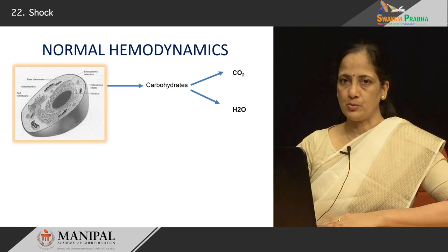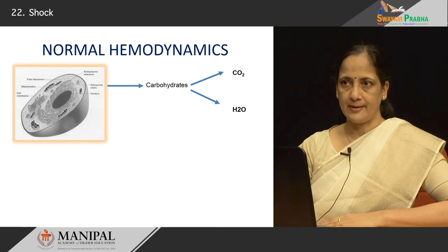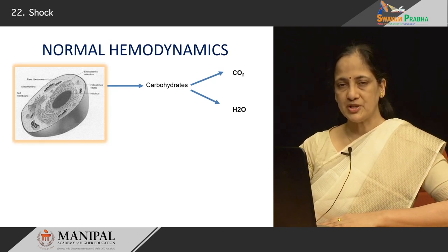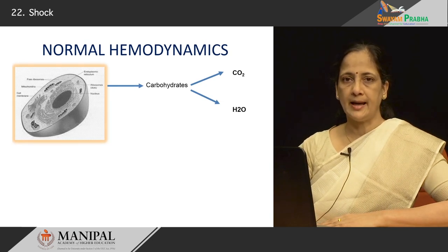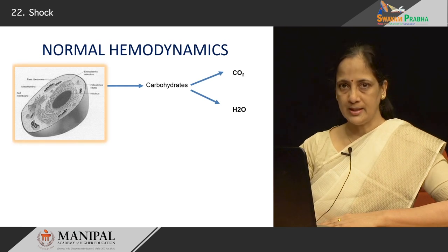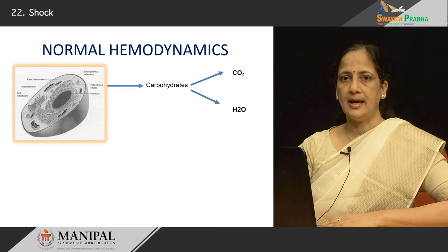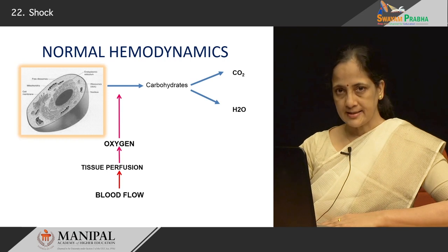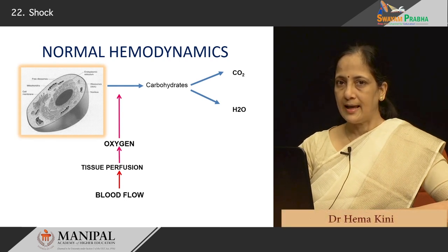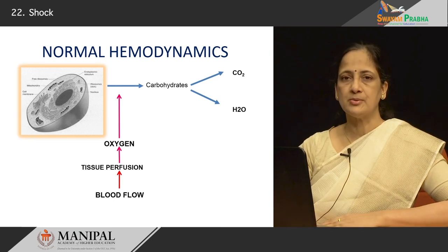Let us go back to the basics for a short while. We know that there is a lot of metabolic and biochemical activity occurring at the level of the cell. For all those activities, energy is generated by the metabolism of carbohydrates, especially glucose, which is broken down into carbon dioxide and water. This carbon dioxide and water, along with other metabolites formed within the cell, are drained into the venules and carried back through the venous circulation to the heart, lungs, and so on. For all these metabolic activities at the cellular level, oxygen is required. This oxygen is brought to the cells and tissues by the blood vessels, and this flow of blood supplying oxygen and nutrients to the tissue is referred to as tissue perfusion.